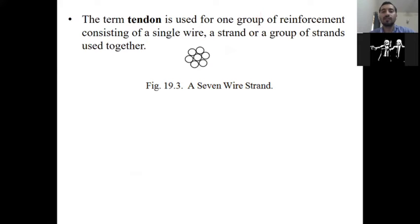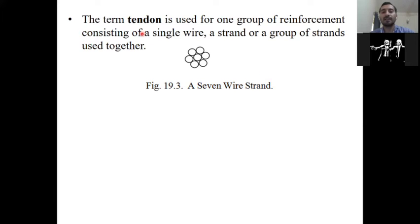So what do you call this? A strand. And the third term is tendon. The term tendon is used for one group of reinforcement, consisting of a single wire or strand, or group of strands used together. For example, in a beam, you have a strand here, and another strand here. So the number of strands or the number of wires together — what do you call it? Tendon.